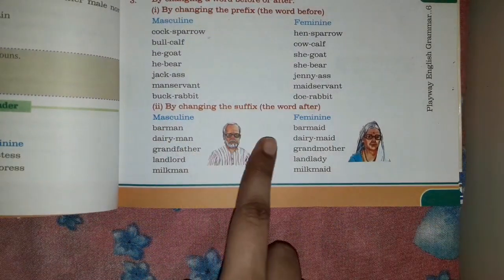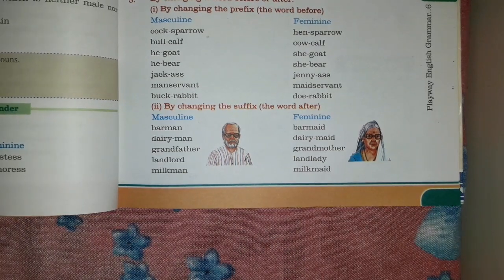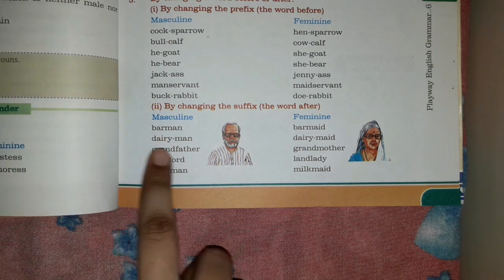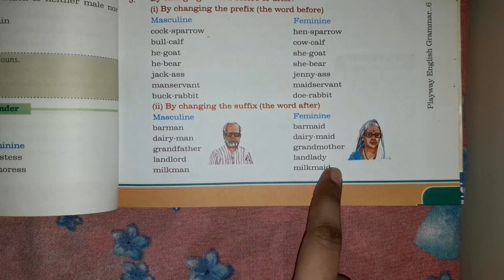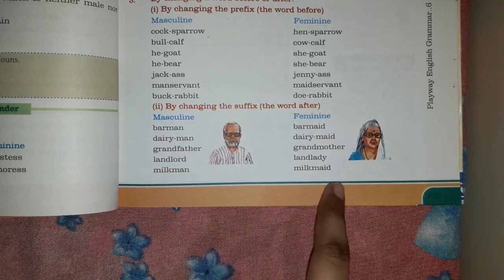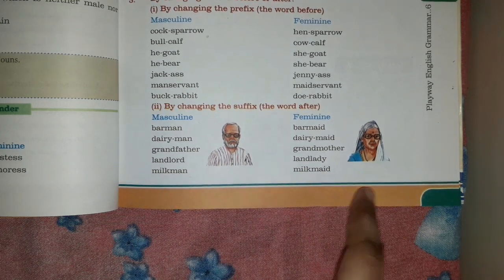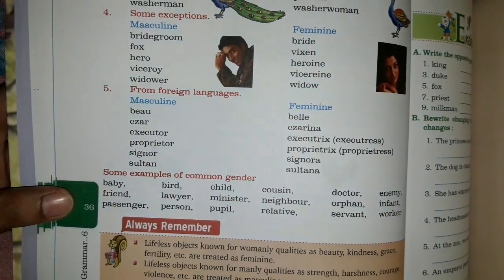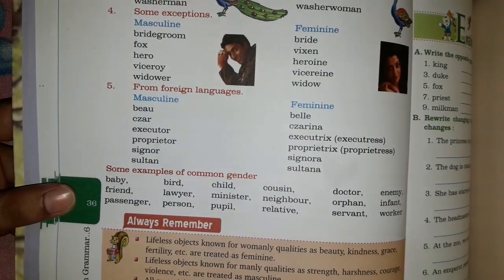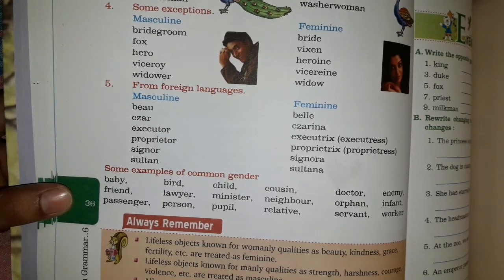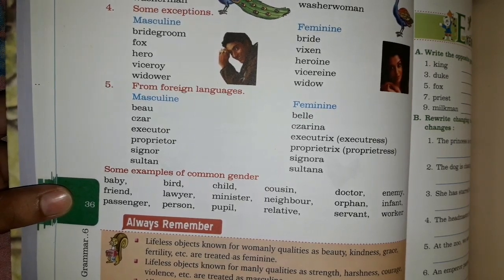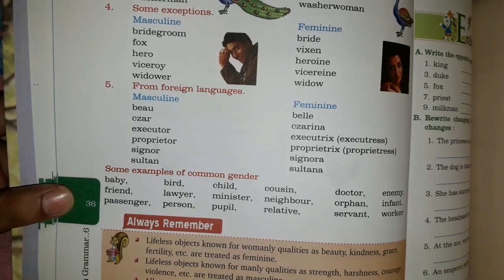By changing the suffix — that is, changing the end part of the word. For example, 'dairyman' becomes 'dairymaid', 'landlord' becomes 'landlady', 'milkman' becomes 'milkmaid'. Fourth, some exceptions: unusual words like 'bridegroom' becomes 'bride', 'viceroy' becomes 'vicereine', and 'widower' becomes 'widow'.